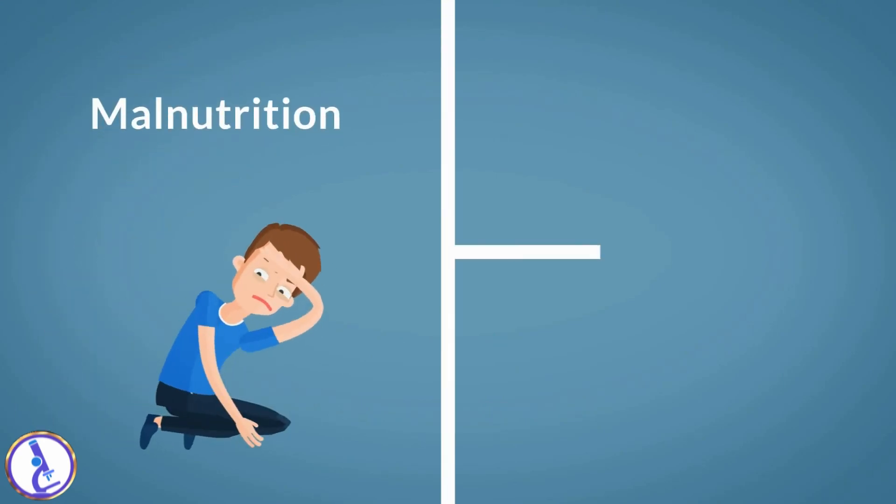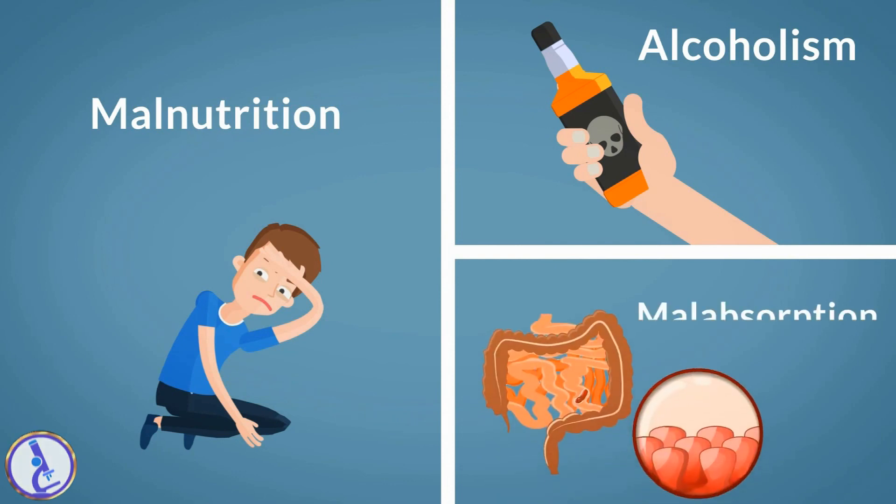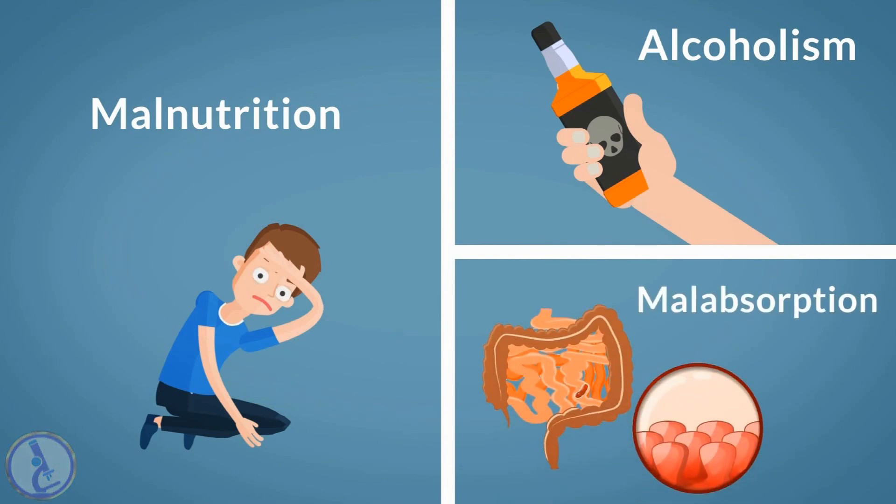People at increased risk include those who are malnourished, are chronic alcoholics, or who have a condition such as celiac disease that is associated with malabsorption.